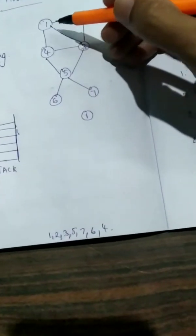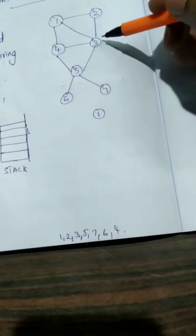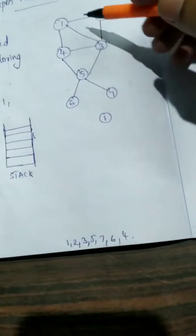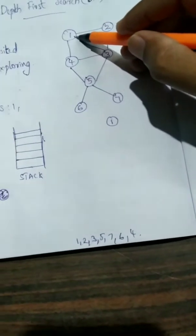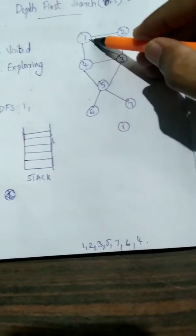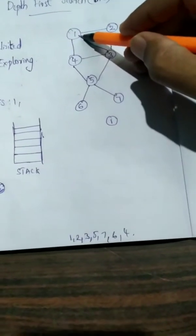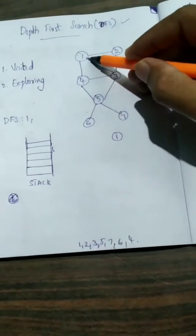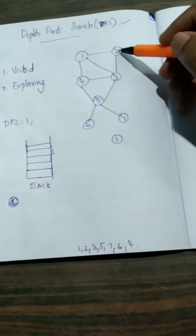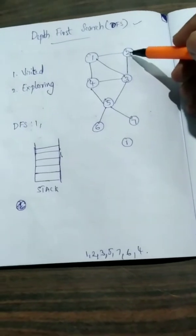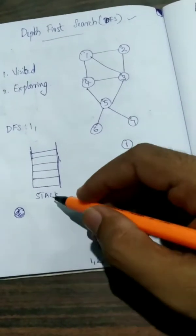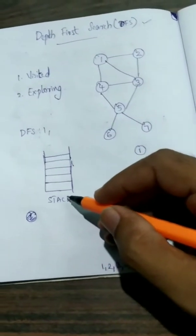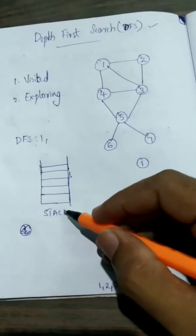This is the graph. First, we will start with vertex 1. We will go to vertex 2. If we are using the data structure, we will start with the stack.